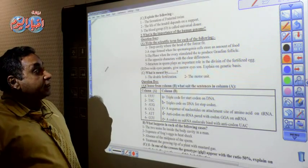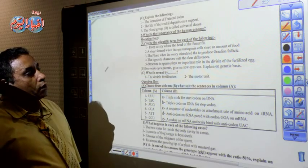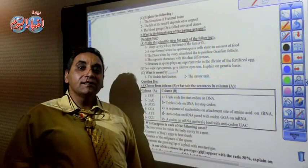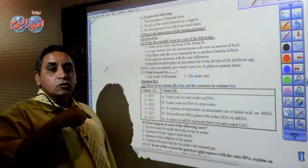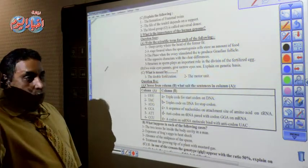Number two: a stage formed when the spermatogonia cells store an amount of food. The storing of food that act as a growth phase. The growth phase is a formation of the spermatogonia into primary spermatocyte. So the right answer is the primary spermatocyte.